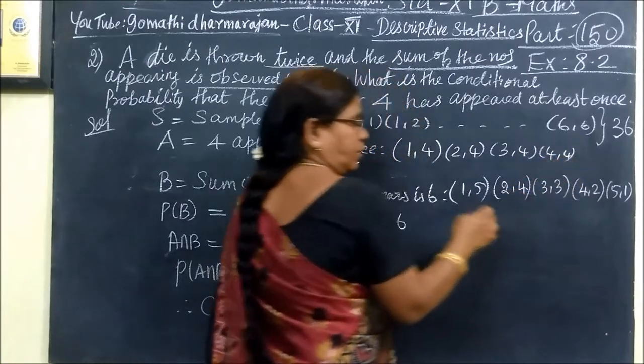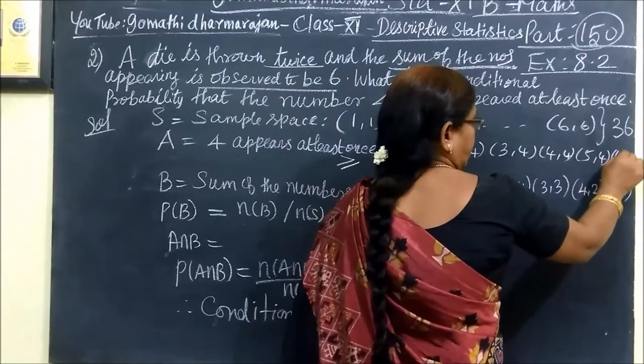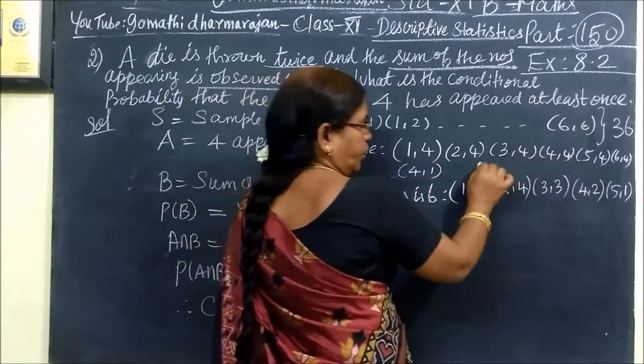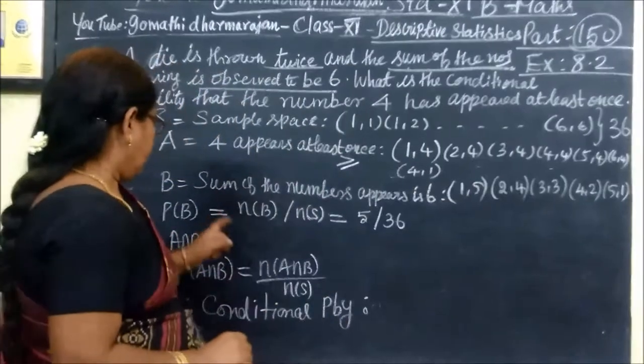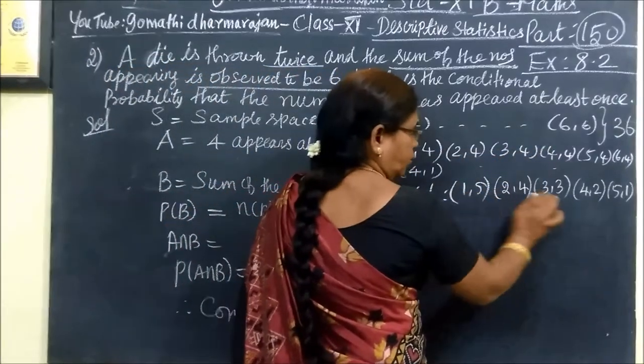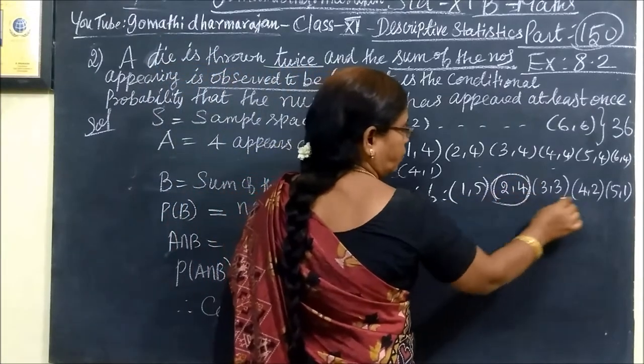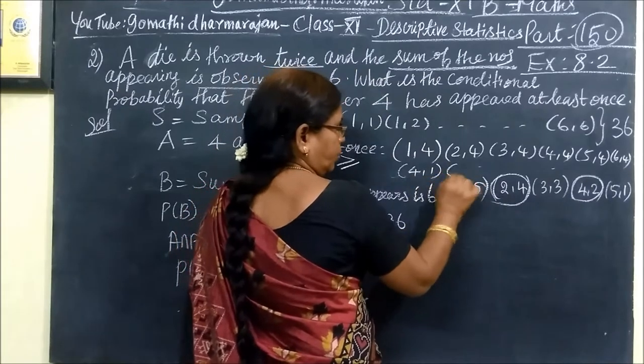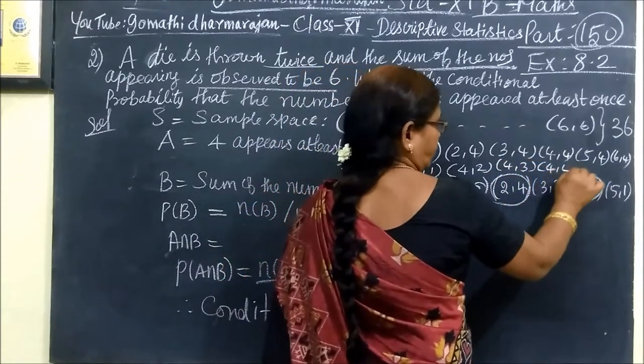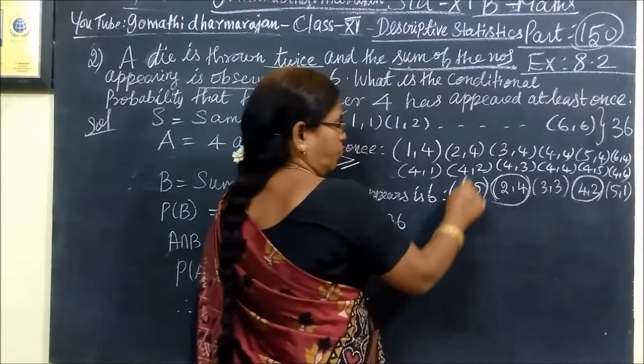4,1, 4,2, 4,3, 4,4, 4,5, 4,6. Then 1,4, 2,4, 3,4, 5,4, 6,4. When we count these, there are 11 outcomes. But 4,4 is common, so we choose 2,4, 4,2. This helps make a difference. 4,3, 4,5, 4,6.